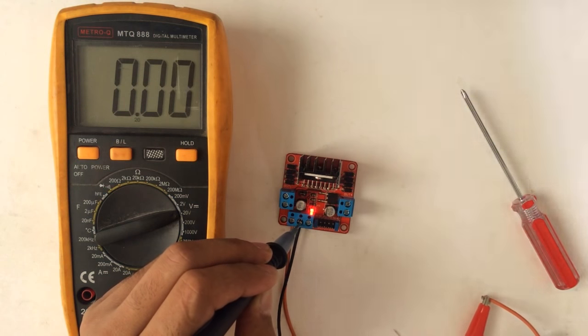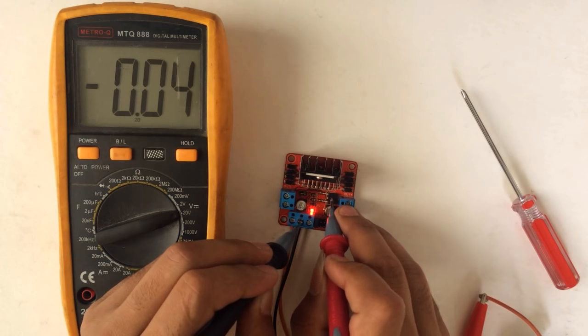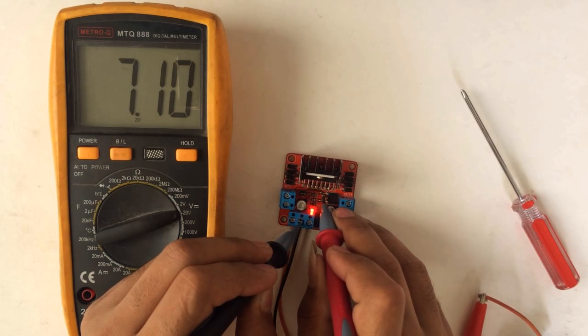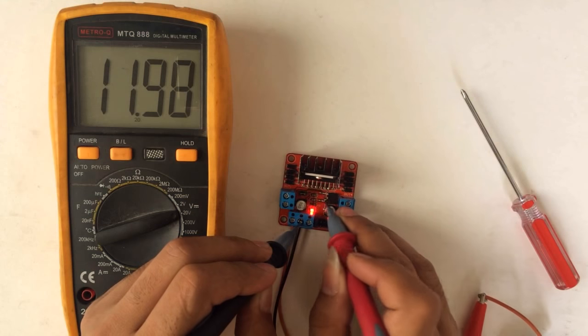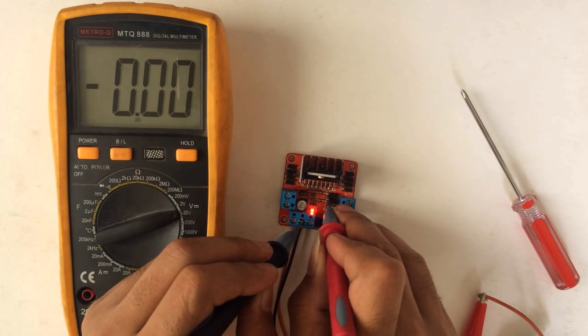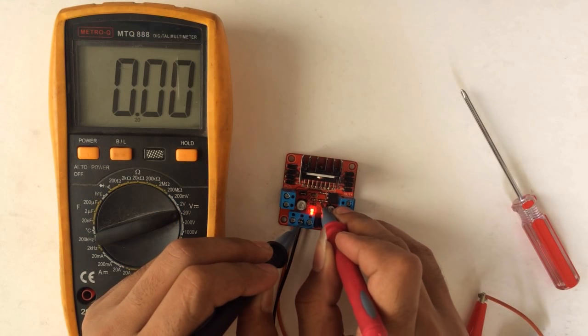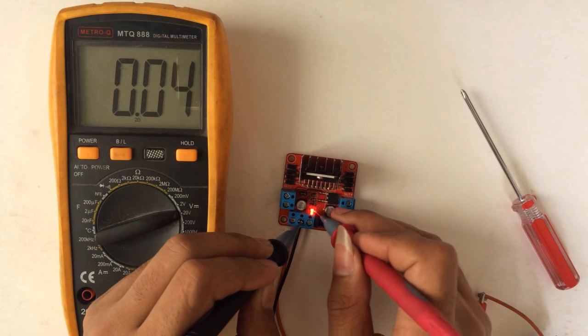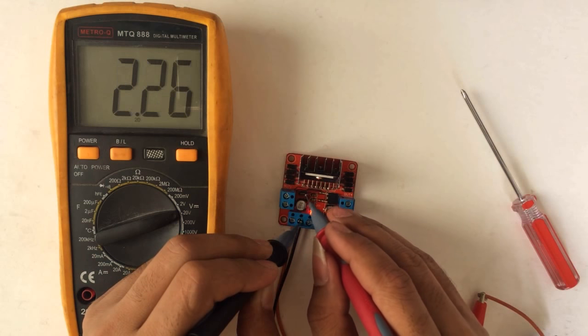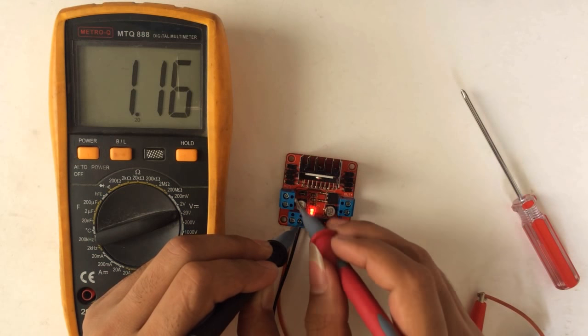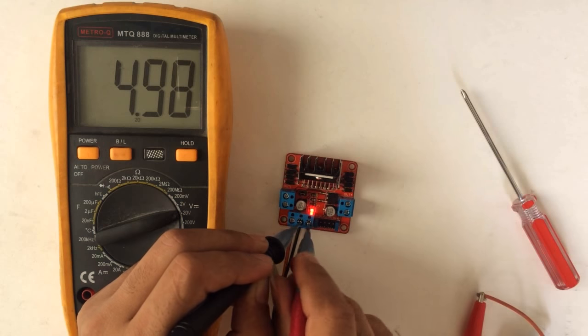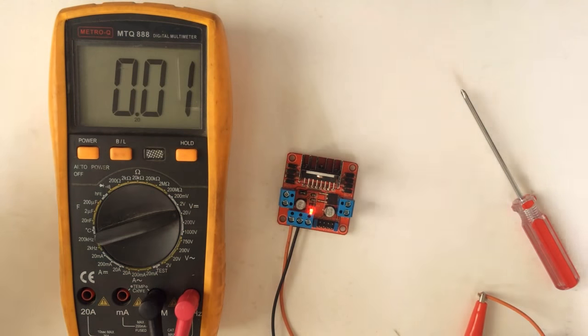This is our 7805 5 volt voltage regulator. This is our input terminal which is 11.98, and the center tap is ground, and this one is our output voltage which is 4.98 volt. If you don't see this light up, you have to first check this connector is connected or not. If this connector is connected and this lights up, there should be 5 volt in our 5 volt connector.